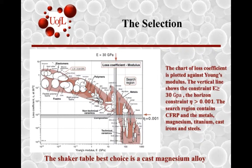The viable materials in that region are mainly metals: magnesium alloy, titanium alloy, CFRP, and cast irons and steels. Magnesium alloy has the best balance between damping and stiffness. A secondary option would be CFRP, which has lower damping but is also possible. Titanium alloys have higher damping but are expensive.